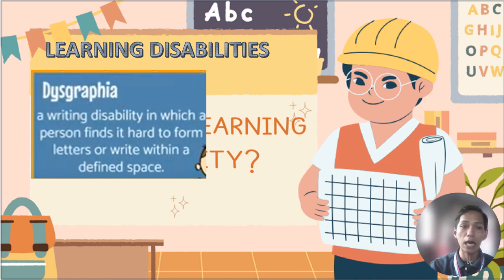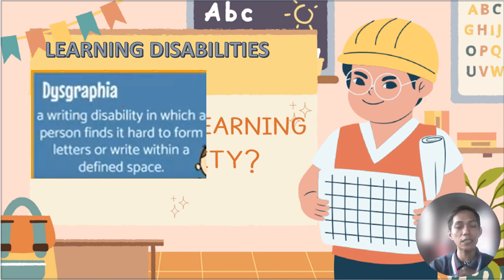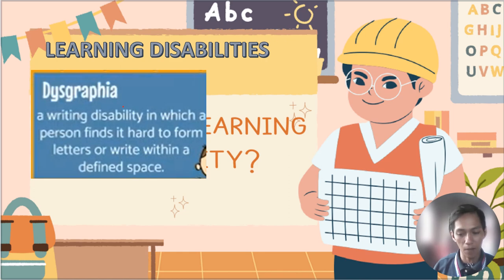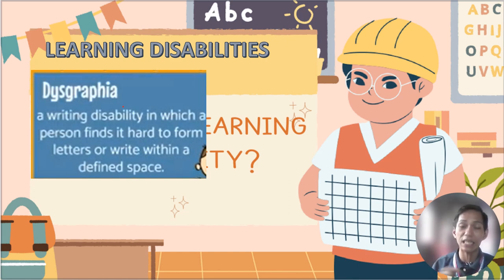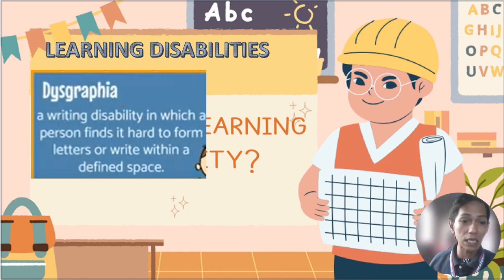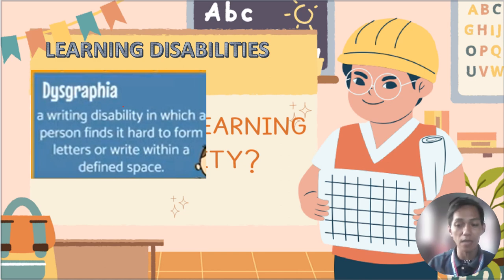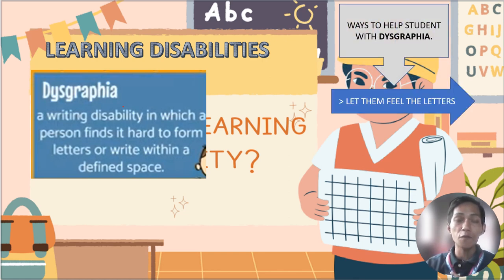The next learning disability is dysgraphia. Dysgraphia is a writing disability in which a person finds it hard to form letters or write within a defined space. For example, a child with dysgraphia may write outside the lines or write disorganized letters — instead of writing 'bird,' they might write 'breed' or 'brid.' As a teacher, it is important to identify if your student has this disability and know how to help them.